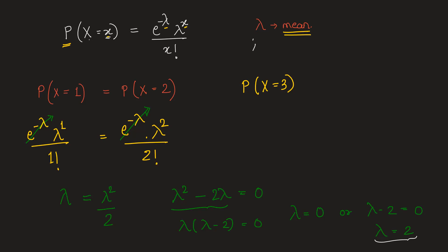Substituting the mean value as 2, we'll find out the probability mass function value at x equal to 3. So this will be equal to e to the power minus 2 times 2 to the power 3 upon 3 factorial.